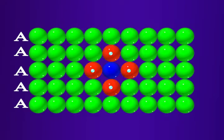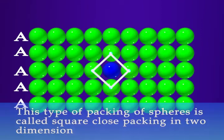If the centers of the four immediate neighboring spheres are joined, a square is formed. Hence, this type of packing is called square-close packing in two dimensions.